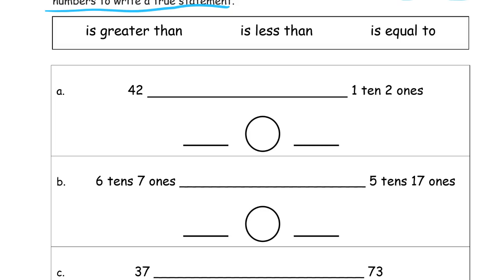So here's 42, that's 42, and this is 1 ten 2 ones, 1 ten 2 ones is 12, and 42 is greater than 12, so let's make sure the alligator eats the larger number.